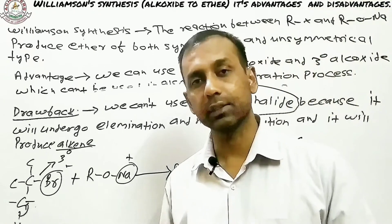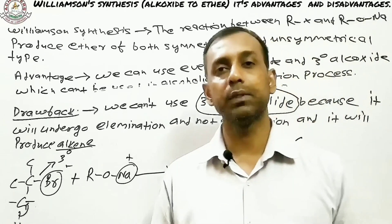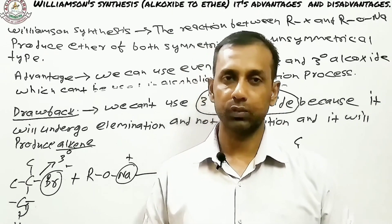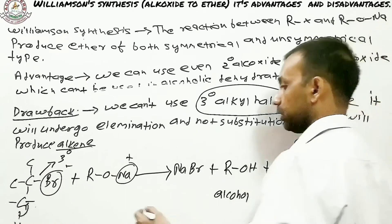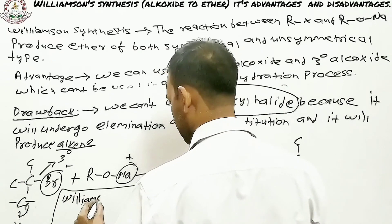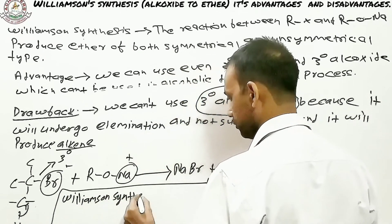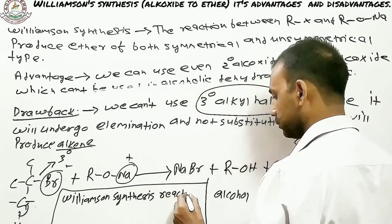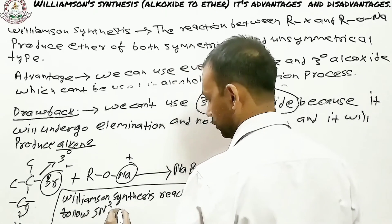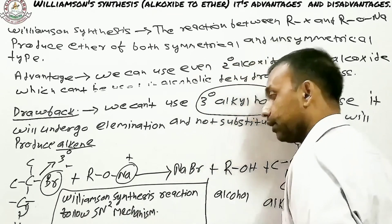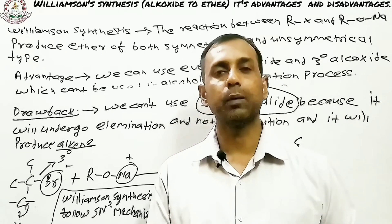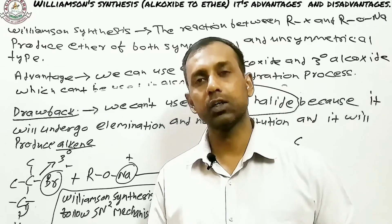So Williamson Synthesis can produce every type of ether that alcoholic dehydration cannot, but its demerit is that the alkyl halide must not be secondary or tertiary, because in that case elimination occurs and alkene forms instead of ether. The entire Williamson Synthesis reaction follows SN2 mechanism. If SN2 mechanism is not clear, check out the playlist or video for Chapter 10 on haloalkanes and haloarenes, where each topic is covered in detail.